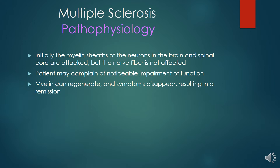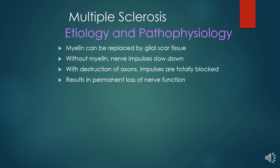The patient may complain of noticeable impairment of function. Myelin can regenerate and symptoms disappear, resulting in remission. Myelin can be replaced by glial scar tissue. Without myelin, the nerve impulse slows down, and with destruction of the axon, impulses are totally blocked, resulting in a permanent loss of nerve function.